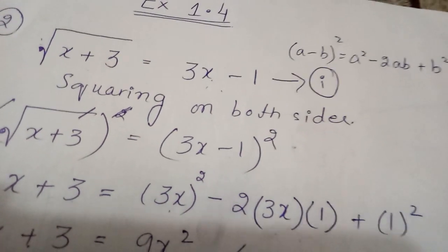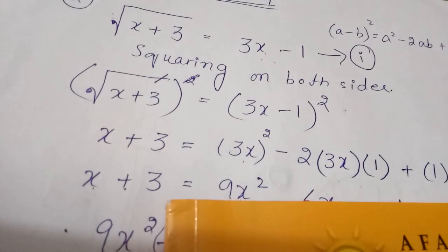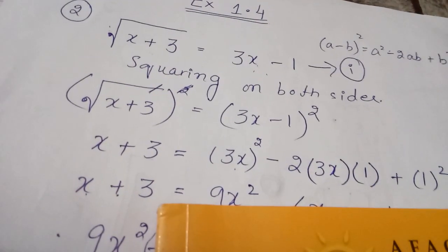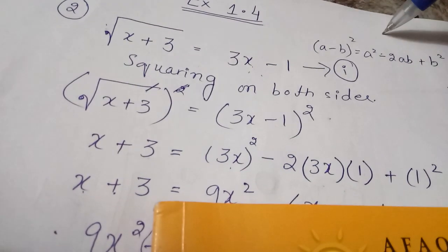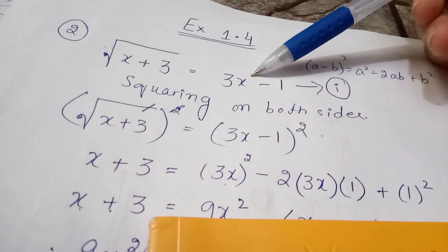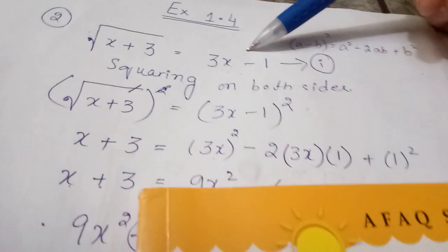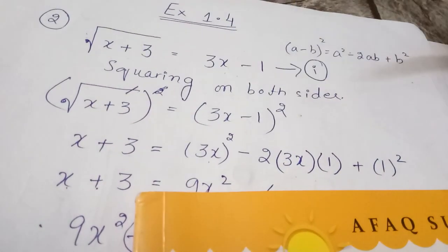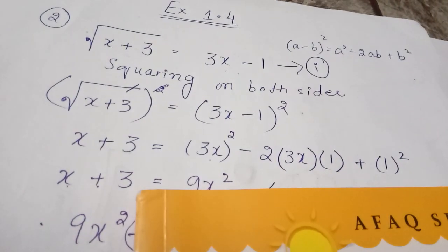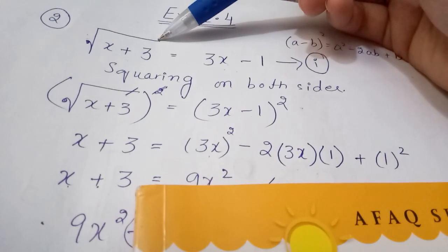Questions one and two were done in the online classes. Questions three and four you have to do yourself — they follow the same Type 1 radical equation approach. Step one: square both sides. We do this to remove the radical sign and simplify the equation.